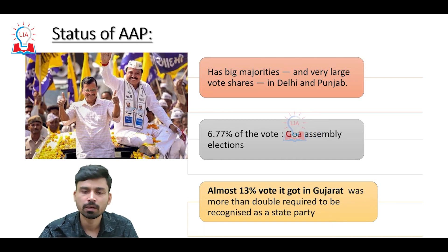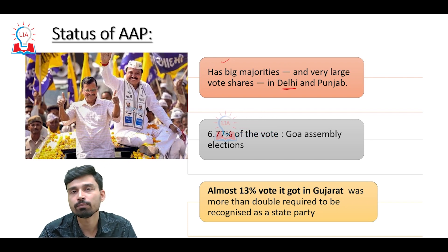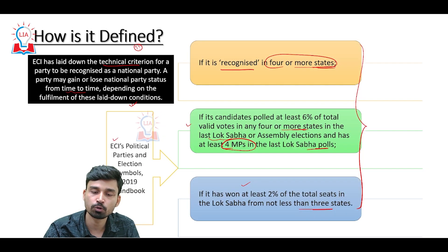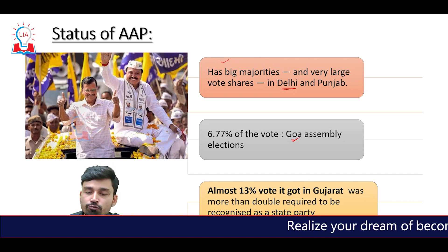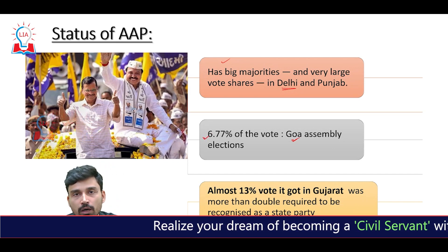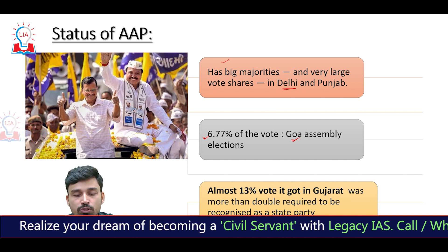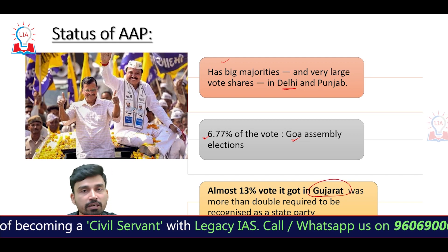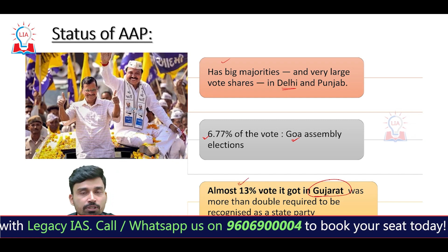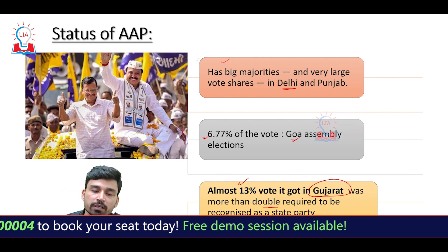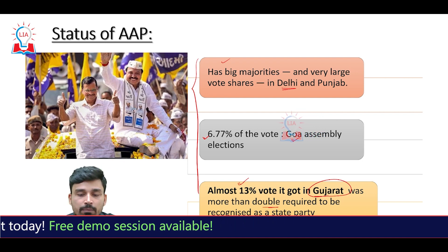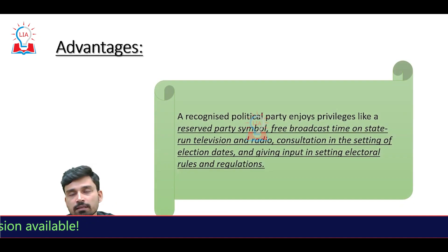As for AAP's status, AAP already has big majorities and has formed the government in two large states — Delhi and Punjab. In the last year's Goa assembly elections, the party got 6.77 percent of the vote, which is higher than the required 6 percent. So they already had State Party status in Delhi, Punjab, and Goa. In the Gujarat assembly election, AAP got almost 13 percent of the vote — more than double what is required. Thus, AAP got State Party recognition in four states — Delhi, Punjab, Goa, and Gujarat — and that is why they were given the status of National Party by the Election Commission of India.